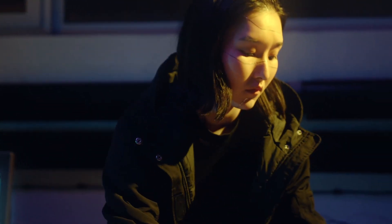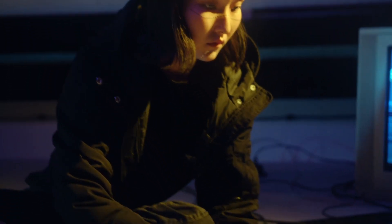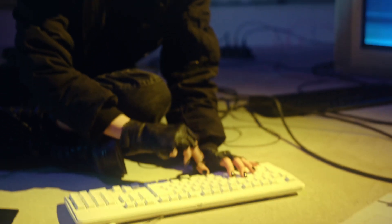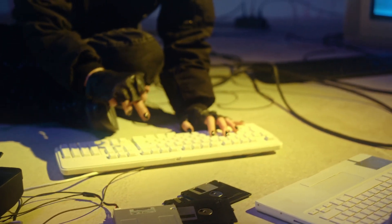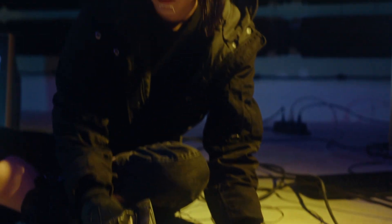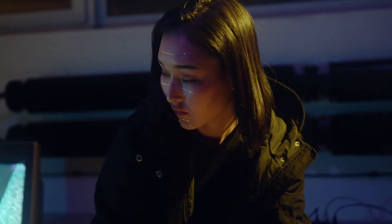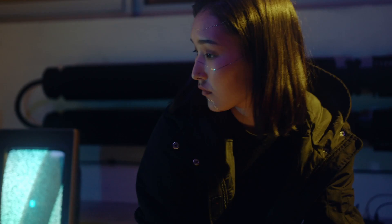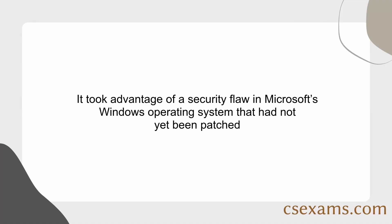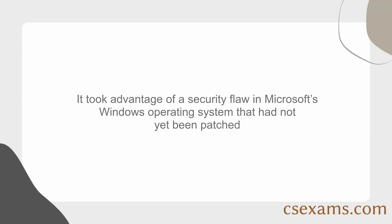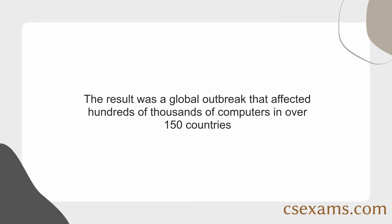WannaCry is ransomware that encrypts a computer's files and demands a ransom be paid in order to decrypt them. It took advantage of a security flaw in Microsoft's Windows operating system that had not yet been patched. The result was a global outbreak that affected hundreds of thousands of computers in over 150 countries.